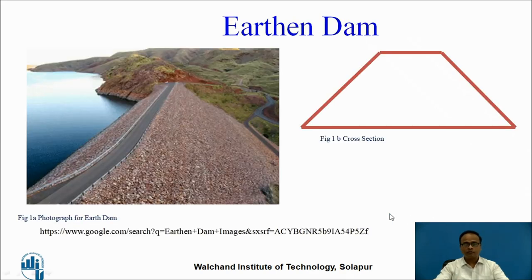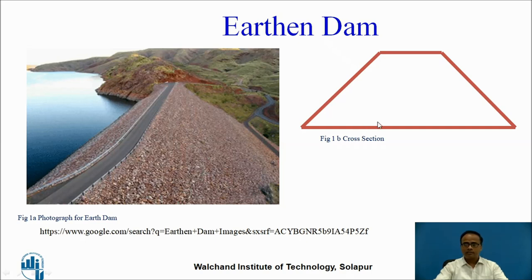This is a photograph of an Earthen Dam. This is the length of the dam, and this is the upstream side of the dam. The material used for the construction of the Earthen Dam is natural material. This is a typical cross-section of the dam — it is just like a trapezoid in shape.